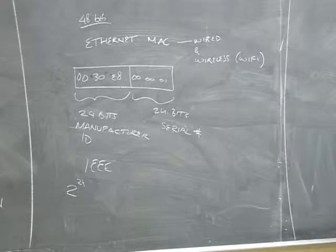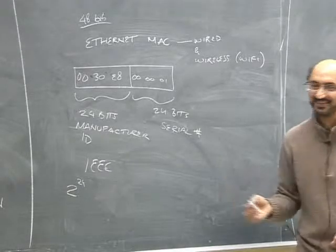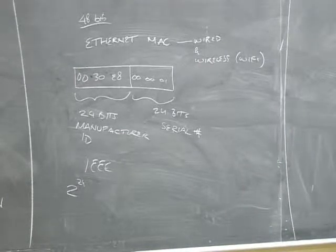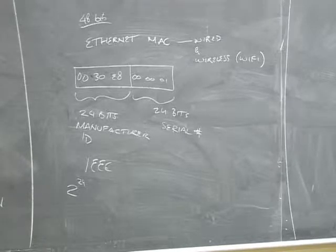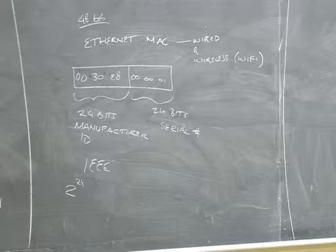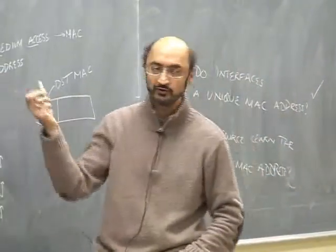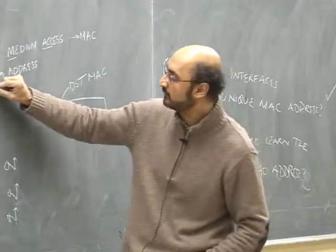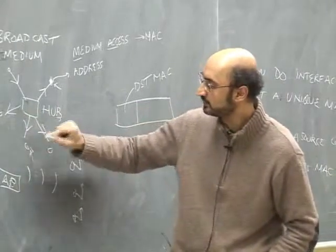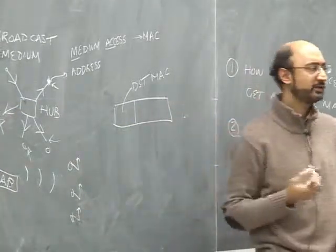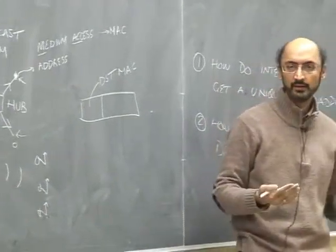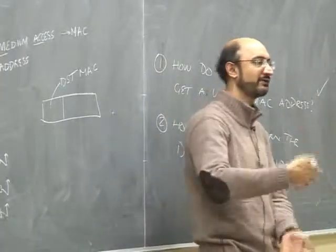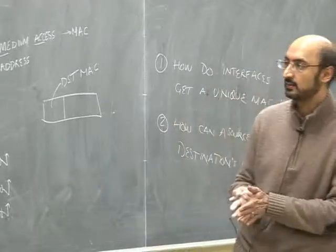These MAC addresses are unique but have no geographical locality — unlike IP addresses, you can't aggregate them. A MAC from Apple, Dell, Cisco, or D-Link will all have different IDs with no pattern. That's why we use broadcast: you can't build routing tables with MAC addresses because there's no way to aggregate them. If you had a million MAC addresses, you'd need a table of size one million. So instead, the Ethernet just broadcasts to everybody.